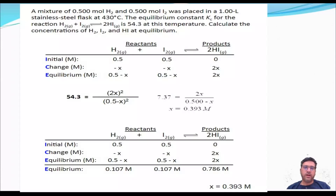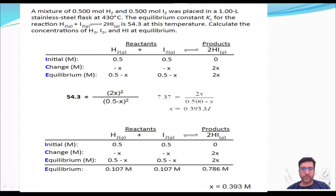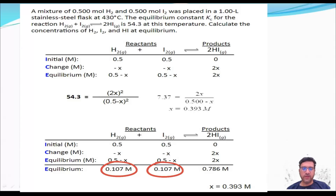Example 2: Hydrogen and iodine were placed in a 1-litre stainless steel flask at 430°C. The equilibrium constant for this reaction is 54.3. Calculate the concentrations of H₂, I₂, and HI at equilibrium. Using an ICE table and substituting values into the equilibrium expression, then taking the square root of both sides to solve for X, the equilibrium concentrations are: H₂ = 0.107 M, I₂ = 0.107 M, and HI = 0.786 M.